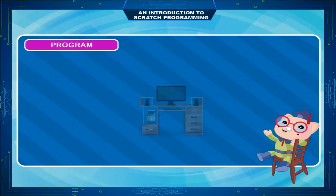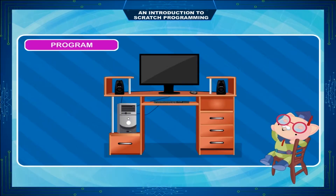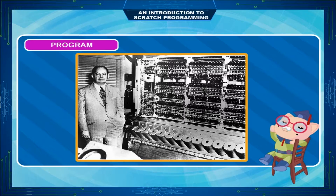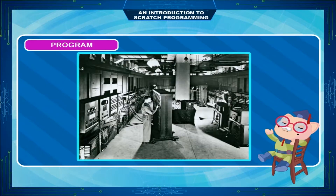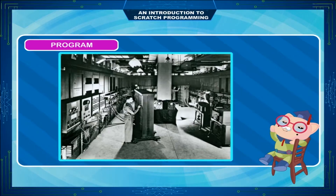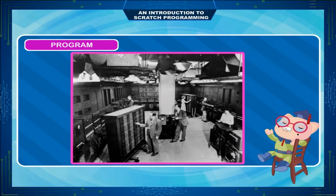Program. In computing, a program is a specific set of ordered operations for a computer to perform a certain task. In the modern computer that John von Neumann outlined in 1945, the program contains a one-at-a-time sequence of instructions that the computer follows. Typically, the program is put into a storage area accessible to the computer. The computer gets one instruction and performs it, and then gets the next instruction. The storage area or memory can also contain the data that the instruction operates on.